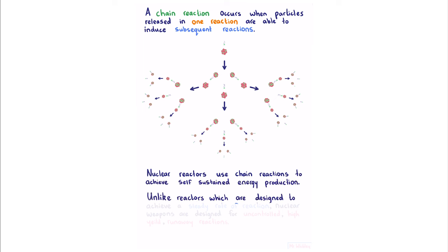Nuclear reactors use chain reactions to achieve self-sustained energy production. Unlike reactors which are designed to achieve a steady rate of reaction, nuclear weapons are designed for uncontrolled, high-yield runaway reactions.